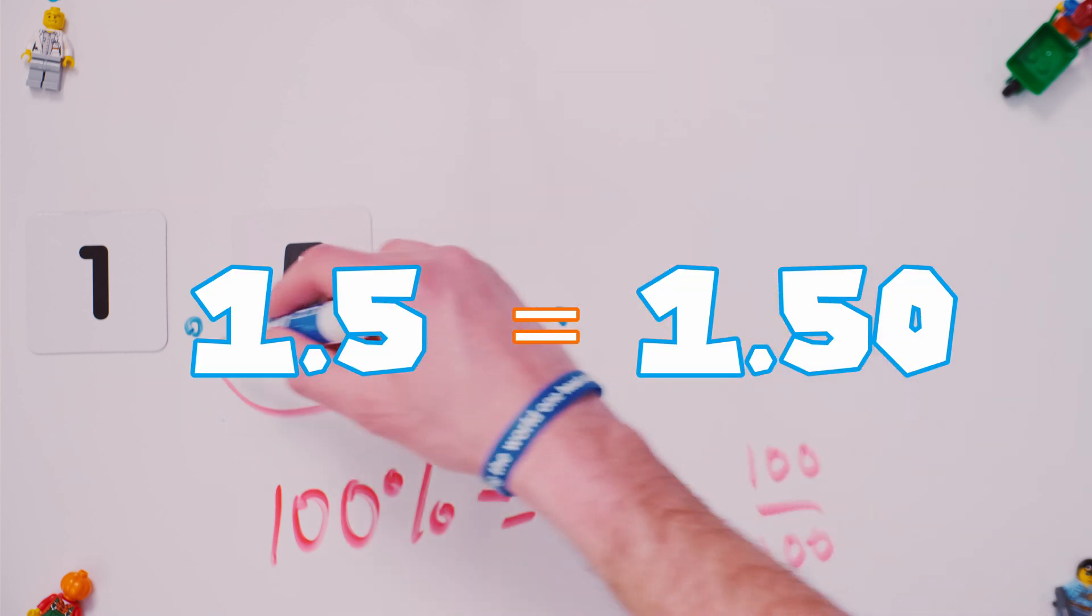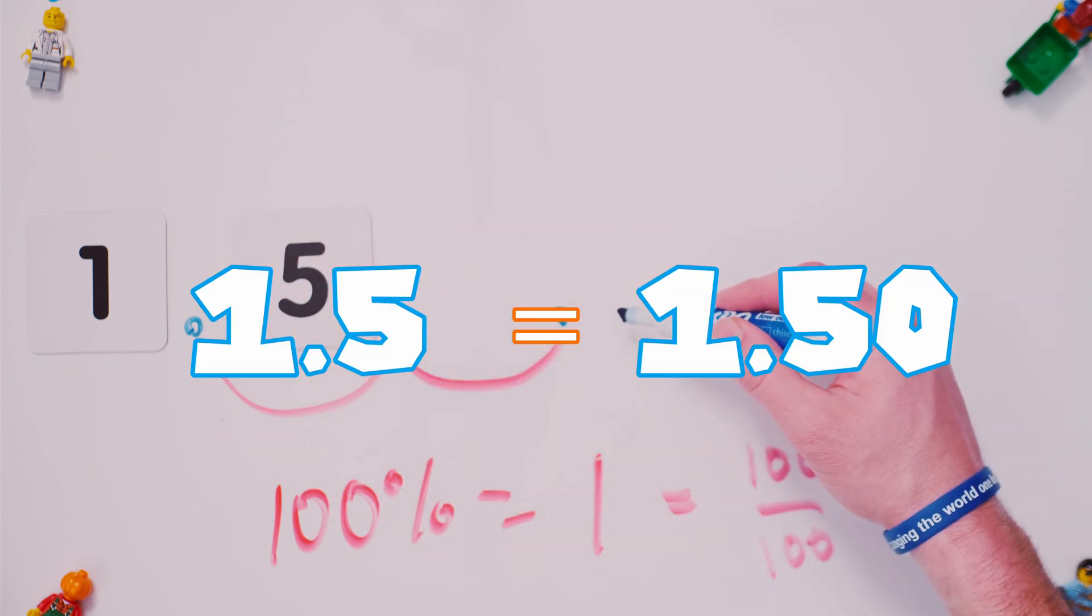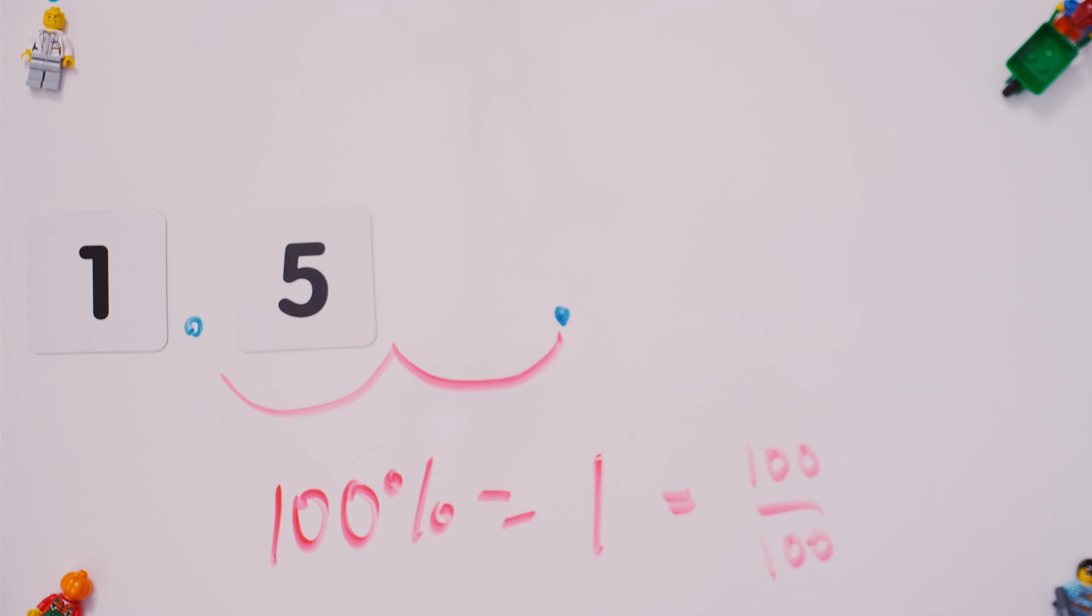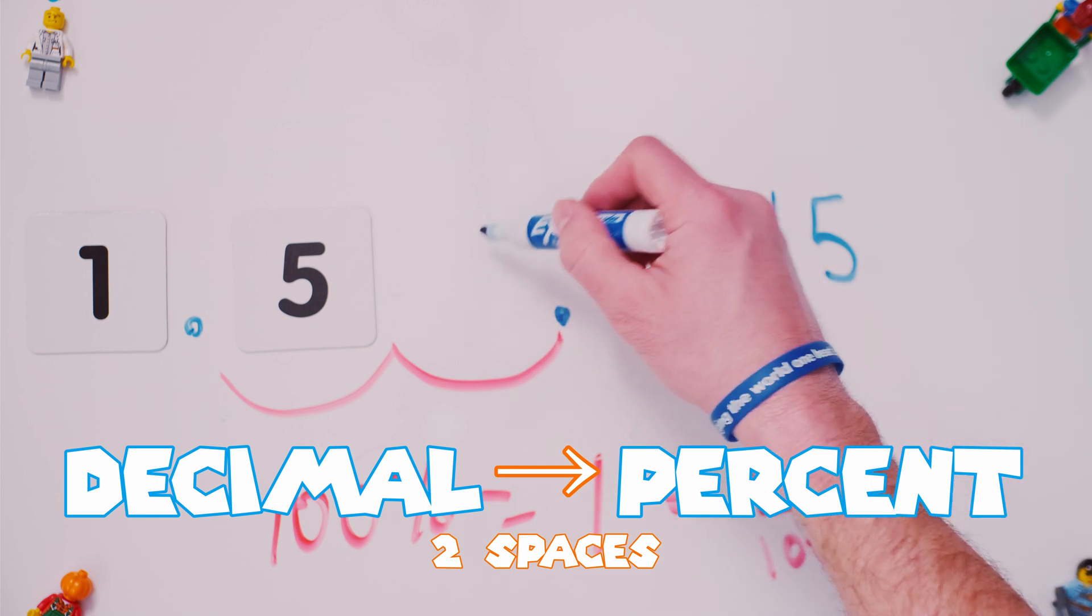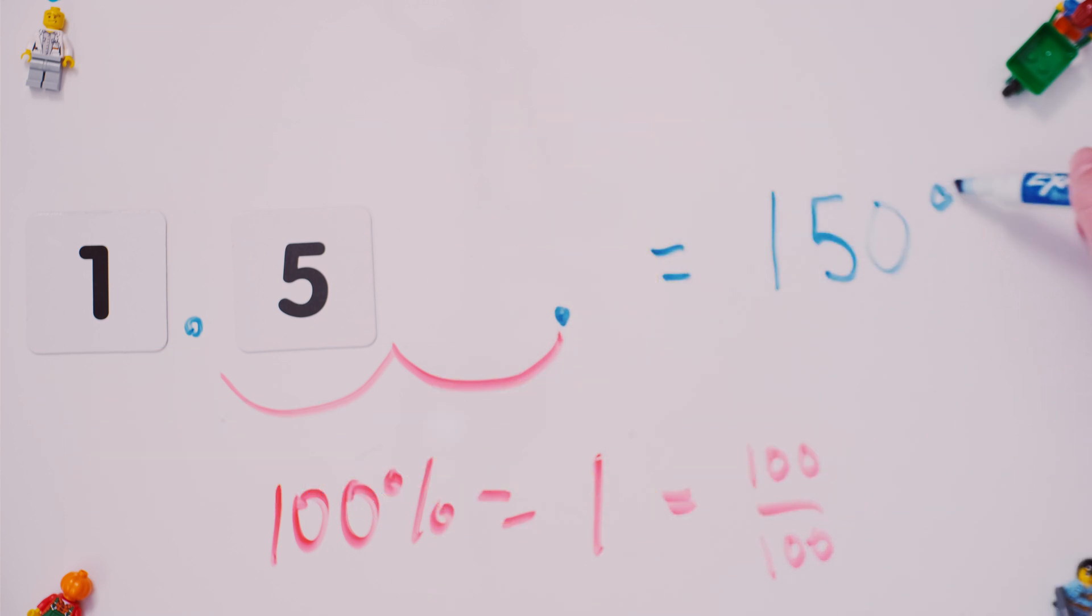So you're going to put the decimal over two spaces to the right when you convert from a decimal to a percent. So what are we really talking about? We're really talking about one, five, and then what goes here? Zero. And now you have your percent.